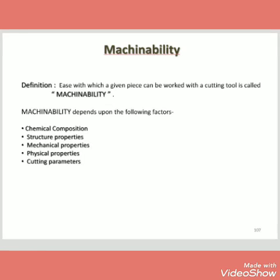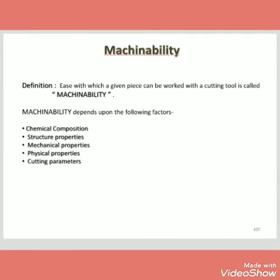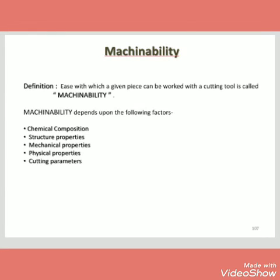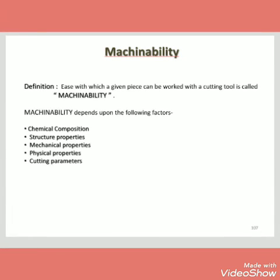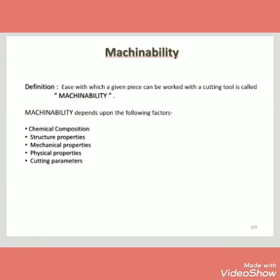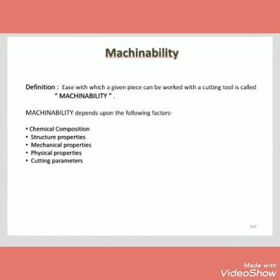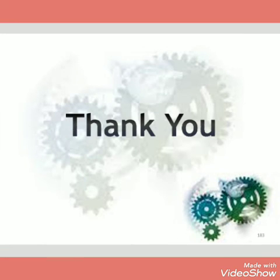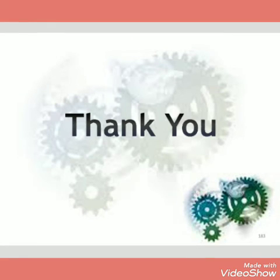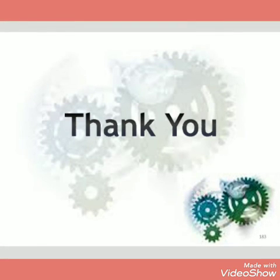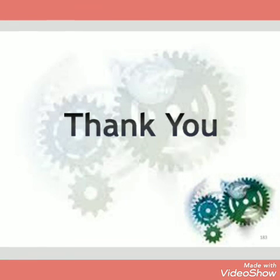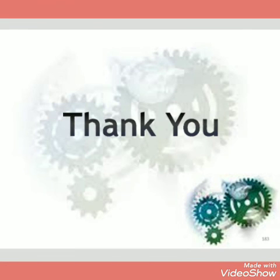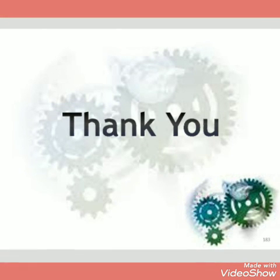Next is machinability. Definition: the ease with which a given piece can be worked with a cutting tool is called machinability. It depends upon the following factors: chemical composition, structural properties, mechanical properties, physical properties, and cutting parameters. Thank you very much for viewing my presentation. That's all from today's machining and machine tools presentation. Thank you very much.